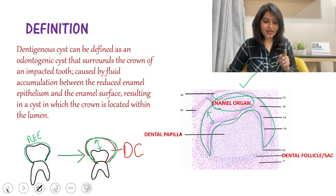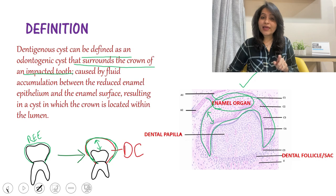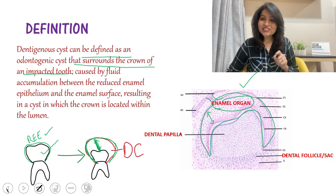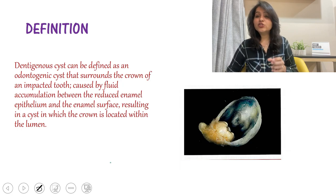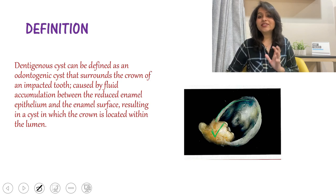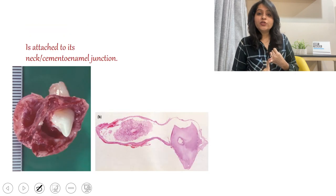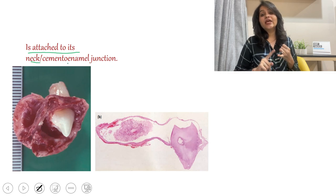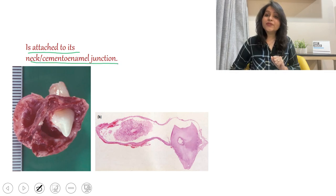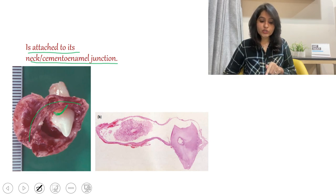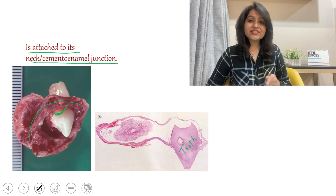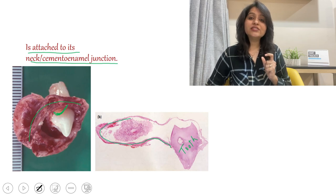A dentigerous cyst can be defined as an odontogenic cyst that surrounds the crown of an impacted tooth, caused by fluid accumulation between the reduced enamel epithelium and the enamel surface, resulting in a cyst in which the crown is located within the lumen. You can appreciate this in the image — this is a gross specimen and the tooth crown is located within the cyst. One more important point: it is a cyst that is attached at the neck of the tooth, or at the cementoenamel junction, as you can appreciate in these images.